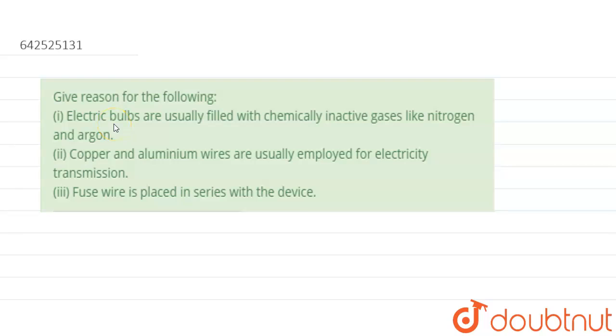First is electric bulbs are usually filled with chemically inactive gases like nitrogen and argon. Second is copper and aluminum wires are usually employed for electricity transmission.